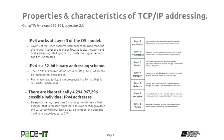IPv4 actually works at layer 3 of the OSI model — that is the network layer. OSI stands for Open System Interconnection and it is a reference model that allows for disparate computing systems to be able to communicate together. It's broken up into seven layers, as you can see to your right, with layer 3 being the network layer, which deals with the logical addressing of networks and nodes.